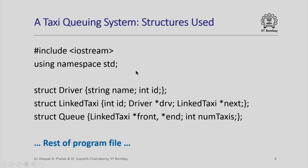In trying to program this in C++, let us understand what kind of structures would be useful. We need linked taxis so we can traverse from one taxi's information to the next, since we want to implement a queue. Each linked taxi should also have information about its driver. So we are going to have three kinds of entities: driver, link taxi, and the overall queue. The structure driver has two members, name and id, as we have seen in an earlier lecture.